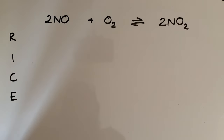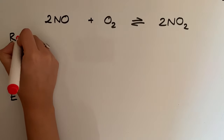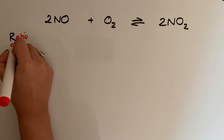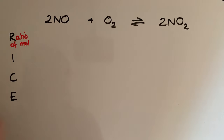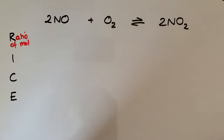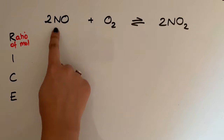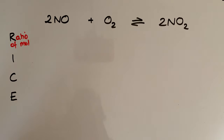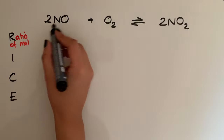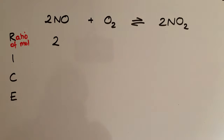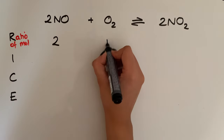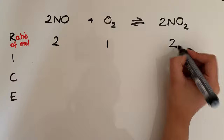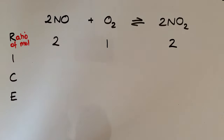The R in RICE stands for the ratio of moles, and we just get that from the balanced equation. We look at the balancing numbers and that gives us our ratio of moles. The balancing number for nitrogen monoxide is 2, for oxygen it's just 1, and for nitrogen dioxide it is 2. So this is the ratio of moles based on the balanced equation.